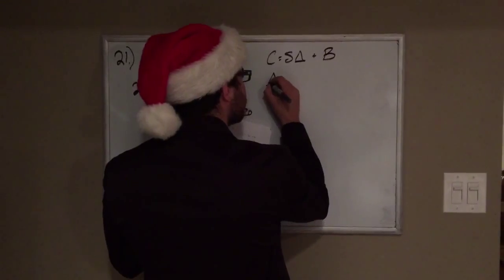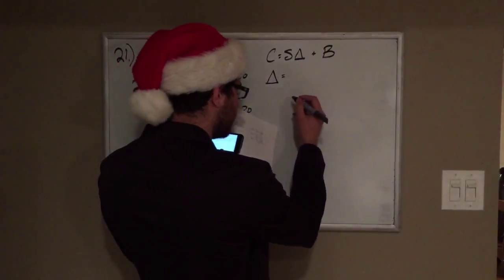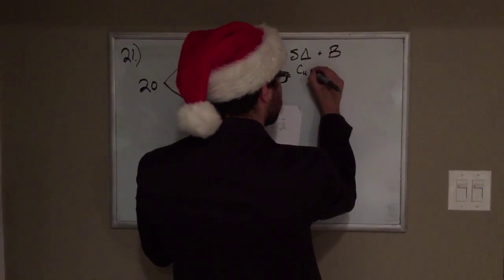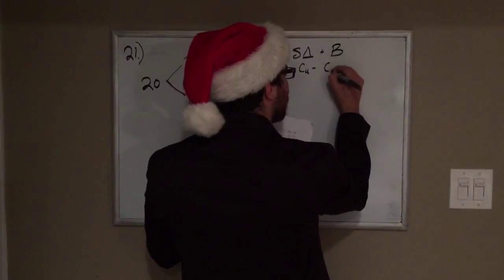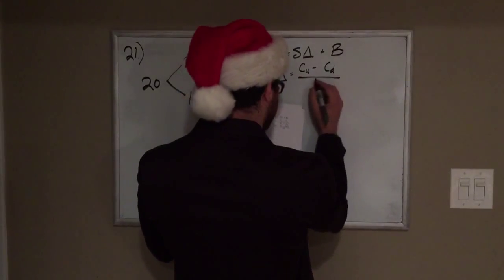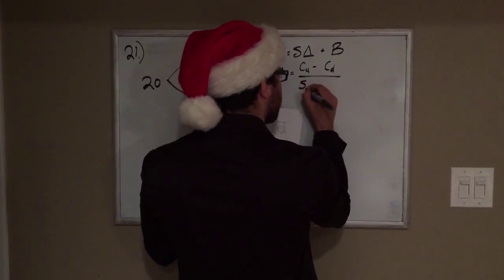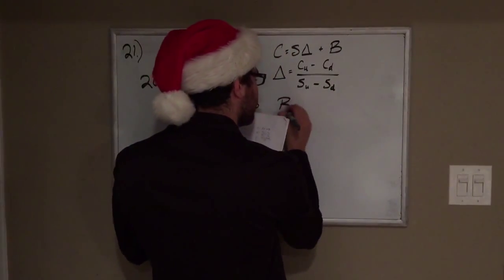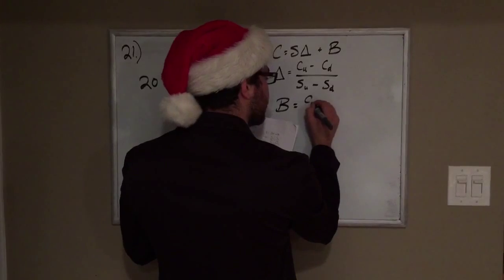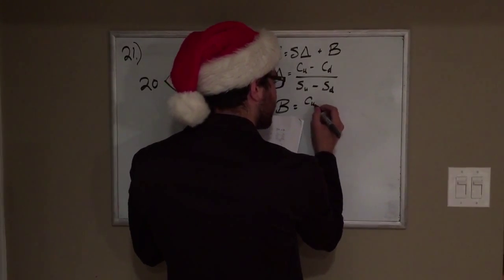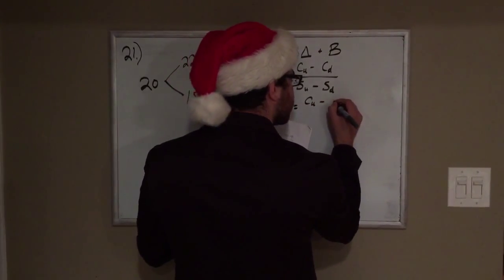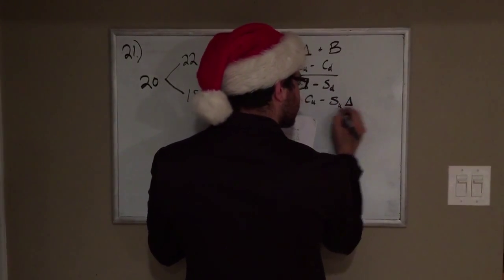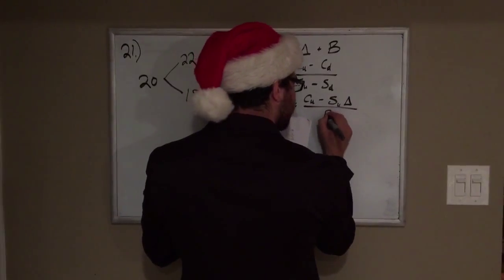Next formula we need to know is the hedge ratio formula, which is just the price of the call if it goes up minus the price of the call if it goes down, over the stock price if it goes up minus the stock price if it goes down. Last one being B, which is equal to the price of the call going up minus the stock if it goes up times delta (or the hedge ratio) all over the rate.